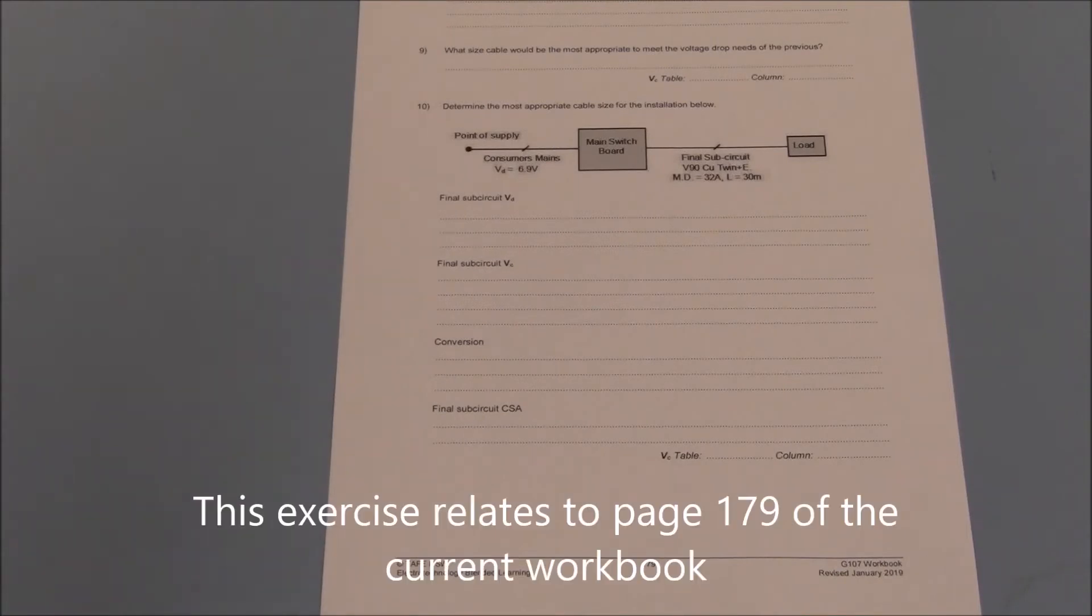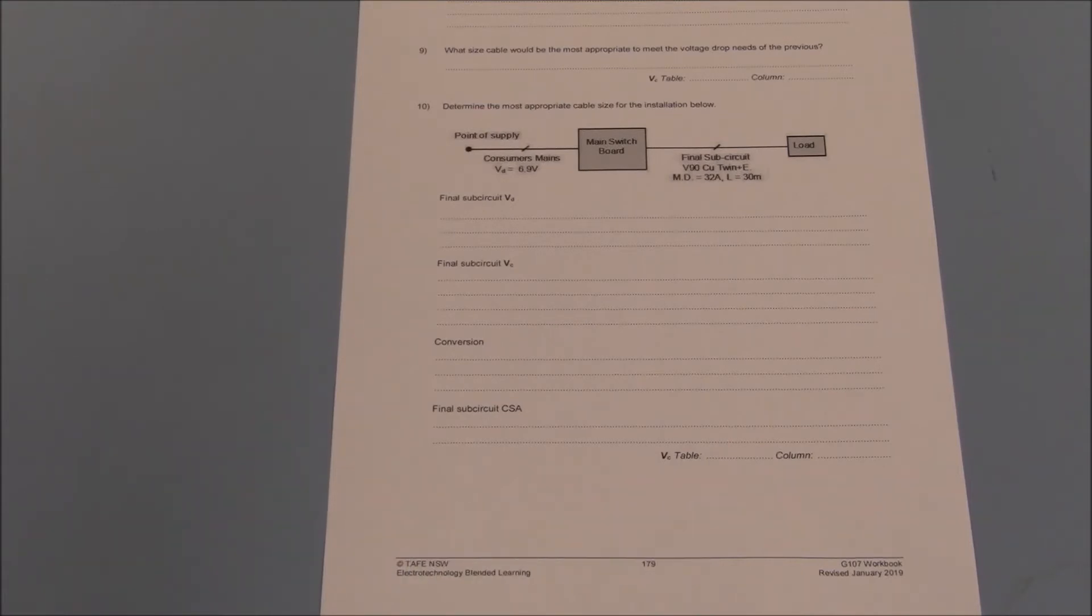AS3000 states voltage drop shall be such that it does not exceed 5% between the point of supply and any other point within the electrical installation. In a single phase installation such as this, that value is no greater than 11.5 volts.